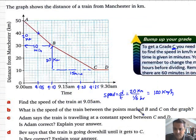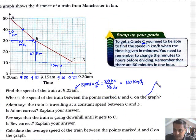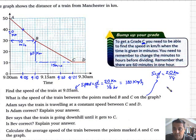Speed equals distance over time. The distance I covered was 20 kilometers divided by 15 minutes, which is essentially a quarter of an hour. Therefore, 20 divided by one-quarter is 80 kilometers per hour.